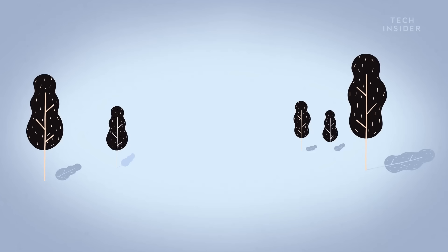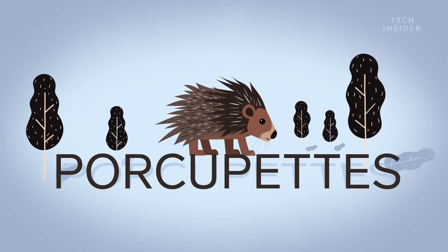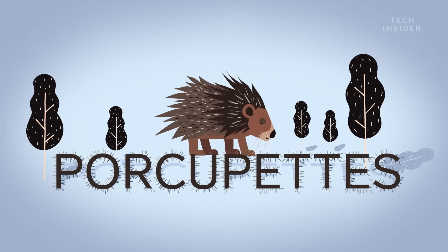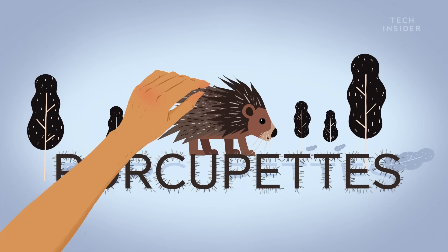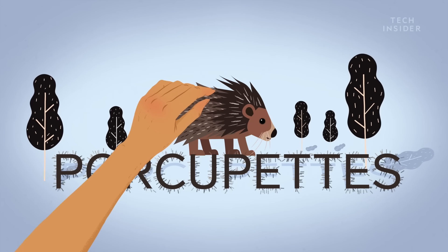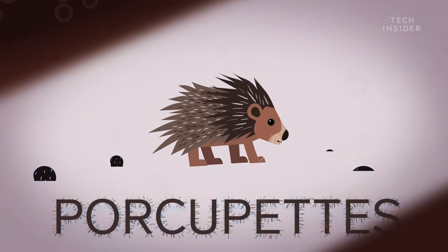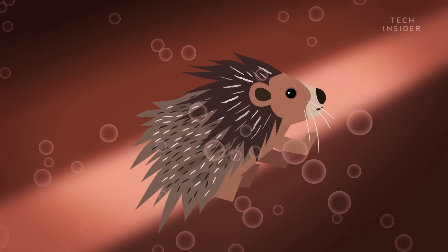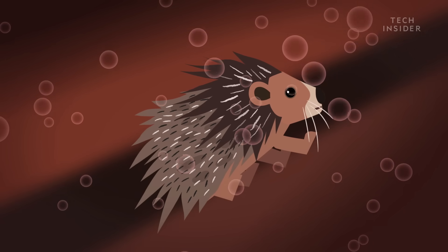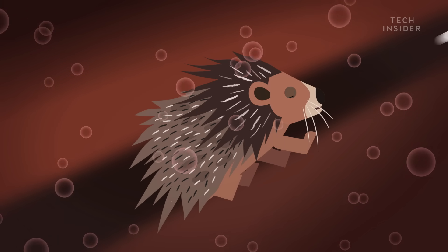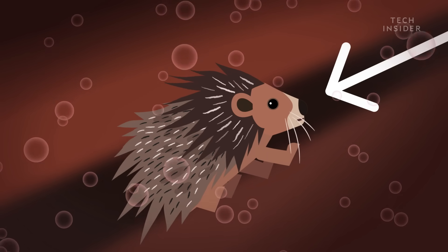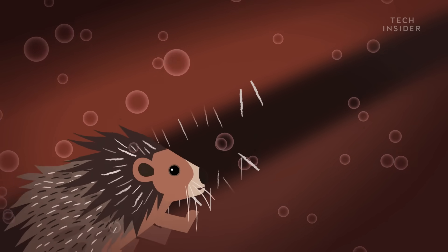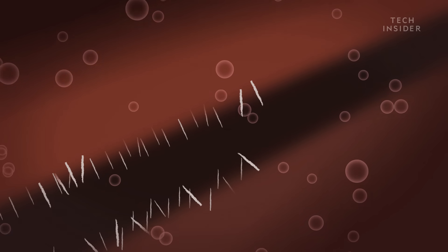You see, baby porcupines, called porcupettes, aren't hairless like most rodent newborns. These guys are born fully quilled. Normally, this isn't a problem for mom, since the quills are soft at birth and gradually harden over the next few hours. But complications can arise when the porcupettes are facing the wrong direction, because their quills can get caught in the birth canal on the way out.